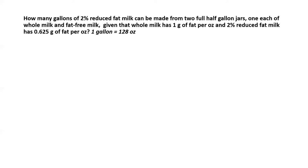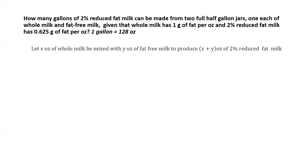So how do we solve this problem? We start by assuming that if we mix X ounces of whole milk with Y ounces of fat-free milk, we can have the mix in the right amount so that we get X plus Y ounces of 2% reduced fat milk, where X and Y must be in the right proportion to produce 2% reduced fat milk.